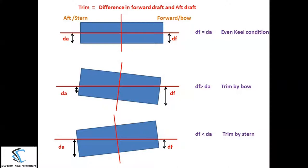There are three conditions regarding trim. If the forward draft and the after draft of the ship are the same, we call it the even keel condition. If the forward draft is greater than the after draft, we call it trim by bow. The third condition: if the after draft is greater than the forward draft, we call it trim by stern. In this case, I have taken the example of the ship as a barge, or a box-shaped vessel.